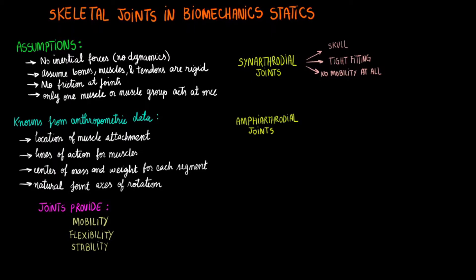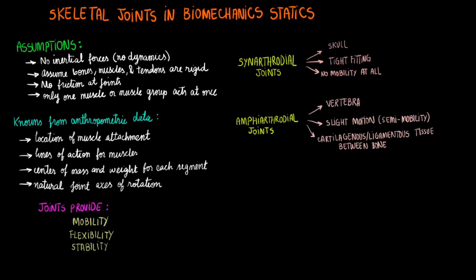The second type is called the amphiarthrodial joint, with examples including the vertebra. These allow for a little bit of motion, but they are special because they possess cartilaginous or ligamentous tissue between the bone tissues at the joint.